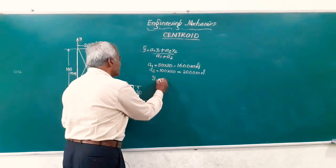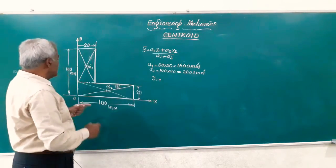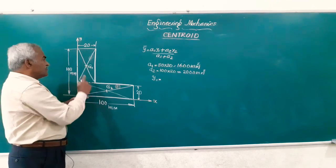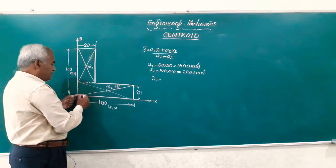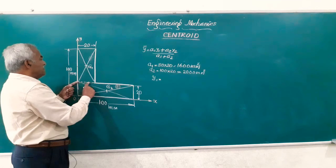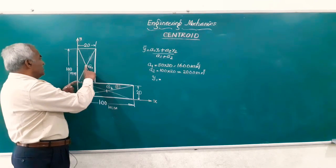Friends, what is y1? y1 is the distance of g1, the centroid of the first figure from the x-axis, from the OX. How far is that? Friends, this is 20 and this gap is 40.